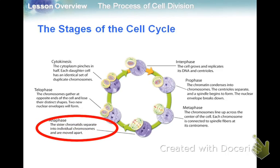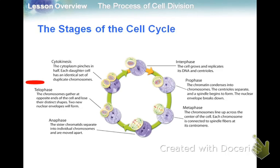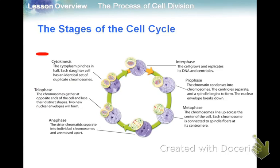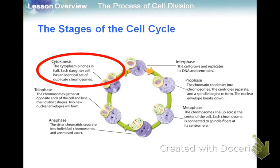Next is anaphase — 'away' or 'apart.' The sister chromatids are pulled apart into individual chromosomes and move to opposite ends of the cell. Then telophase — 'two' nuclei. The chromosomes gather at opposite ends, two new nuclear envelopes form, the nucleolus comes back, and the spindle breaks down — the opposite of prophase. Finally, cytokinesis: in animal cells the cytoplasm pinches in, and in plant cells the cell plate forms, dividing the cytoplasm into two.